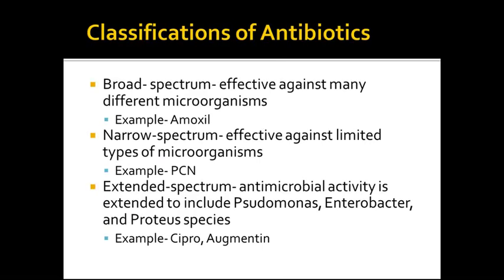Classification of antibiotics. Broad spectrum is effective against many different types of microorganisms — an example is amoxil. Narrow spectrum is effective against limited types of microorganisms; penicillin has started to fall under this category due to increased resistance. Extended spectrum antimicrobial activity is extended to include Pseudomonas, Enterobacter, and Proteus species — examples would be Cipro and Augmentin. I want you to be aware that there are three different classifications.